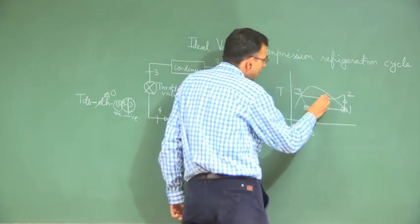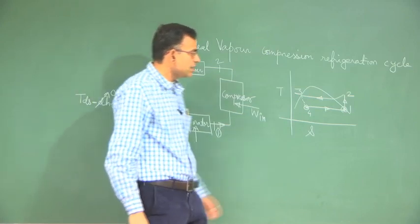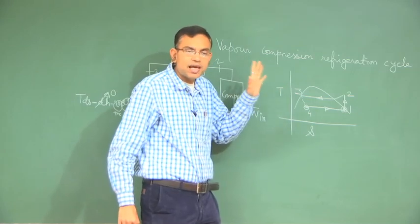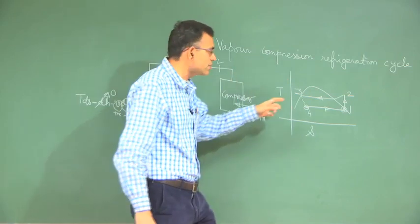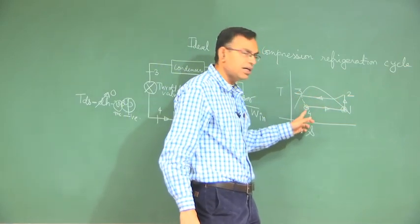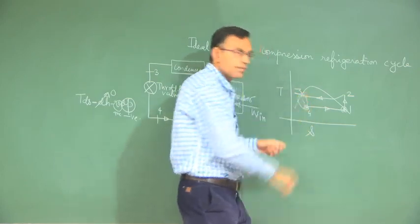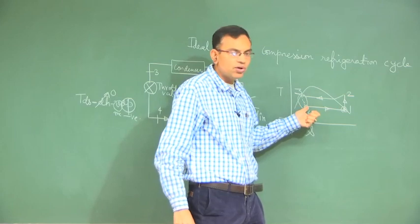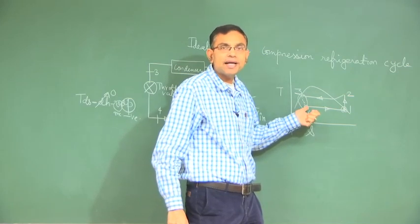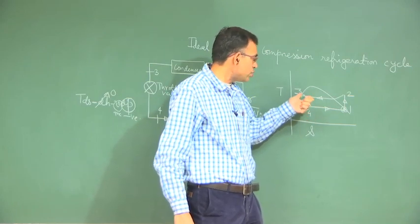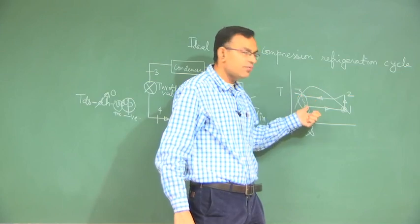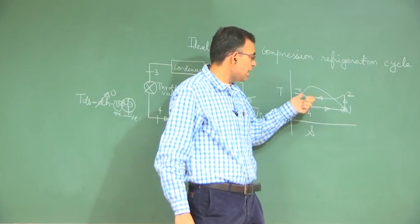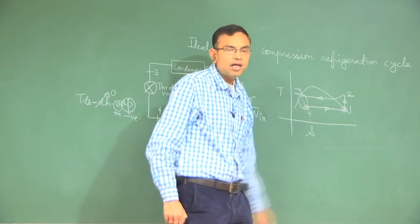One important aspect of this diagram is that for all cycle analysis, we consider processes to be internally reversible. However, the throttling process is not internally reversible, so we draw it with a dotted line. Throttling is such a rapid process that intermediate states between 3 and 4 may not attain thermodynamic equilibrium — we know only the end states 3 and 4, not the intermediate states.